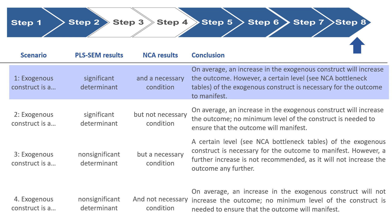How can we conclude it? We can say that, for example, on average, an increase in the exogenous construct will increase the outcome. However, a certain level of the exogenous construct is necessary for the outcome to manifest.